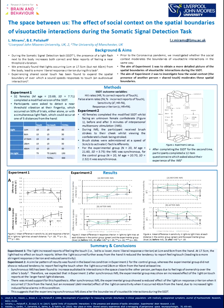We investigated the effect of social context on visuotactile multi-sensory interactions during the somatic signal detection task. In this task, the presence of a light flash next to the body increases both correct and false reports of feeling a near-threshold vibration. In this study, we wanted to get a detailed picture of the spatial boundaries over which the light affects touch reports, and also investigate the effect of experiencing a shared social touch on these spatial boundaries.